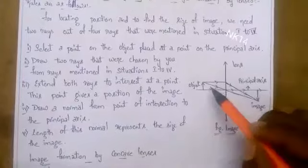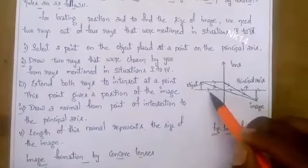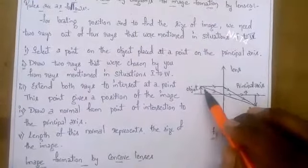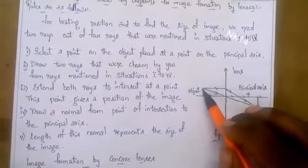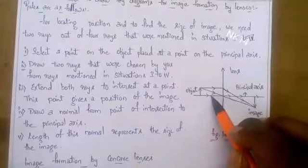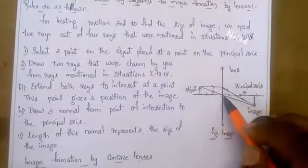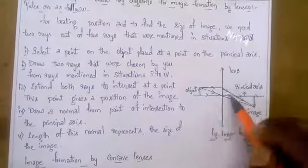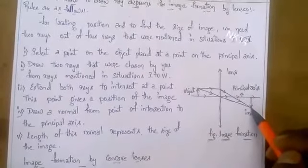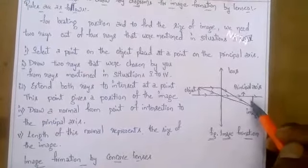In short, we place the object on the principal axis. The base of the object is on the principal axis and for the top we take two rays: one ray passing parallel to the principal axis, and another passing through the optic center. The ray parallel to the principal axis converges after refraction through the convex lens, while the ray through the optic center goes straight without deviation. We extend both rays until they meet at one point — this is where the image is formed. From that point, we draw a normal line toward the principal axis, and the length of this normal shows the size of the image.